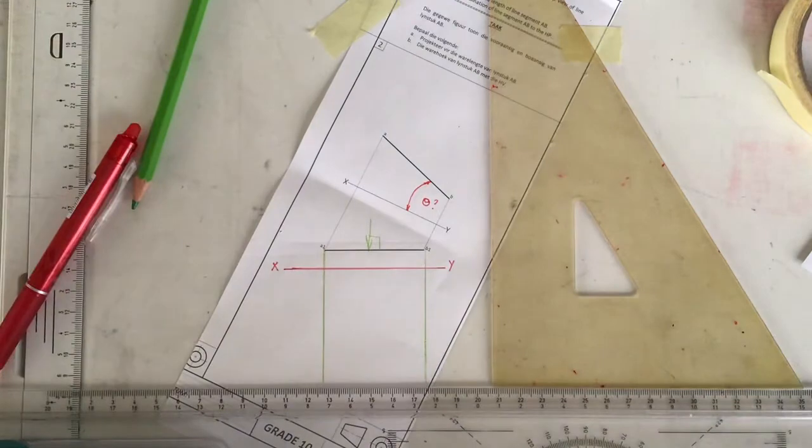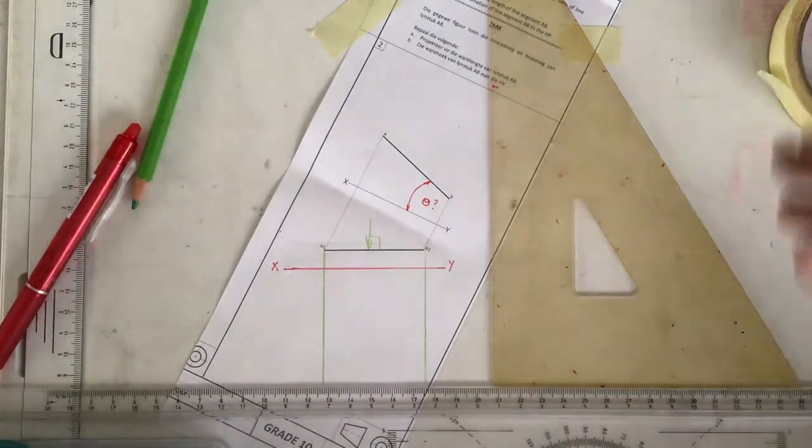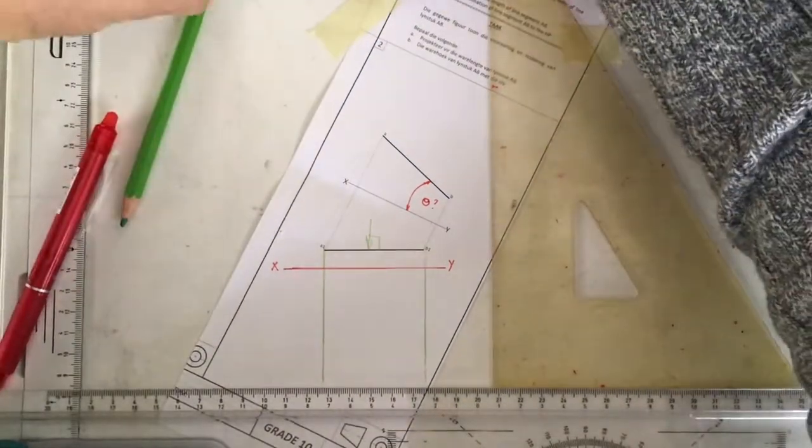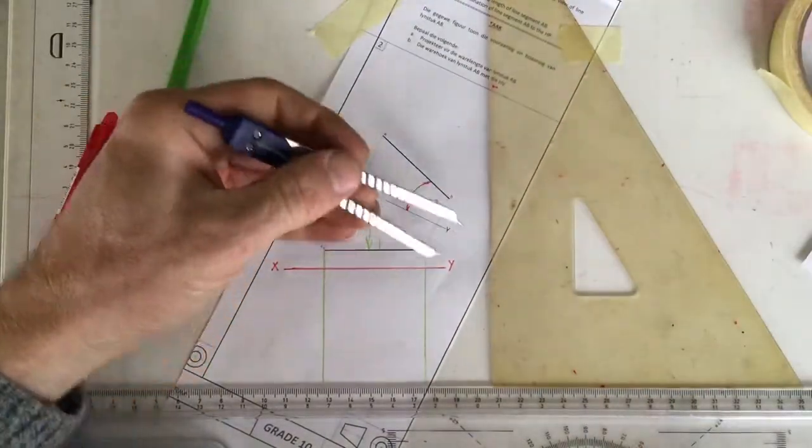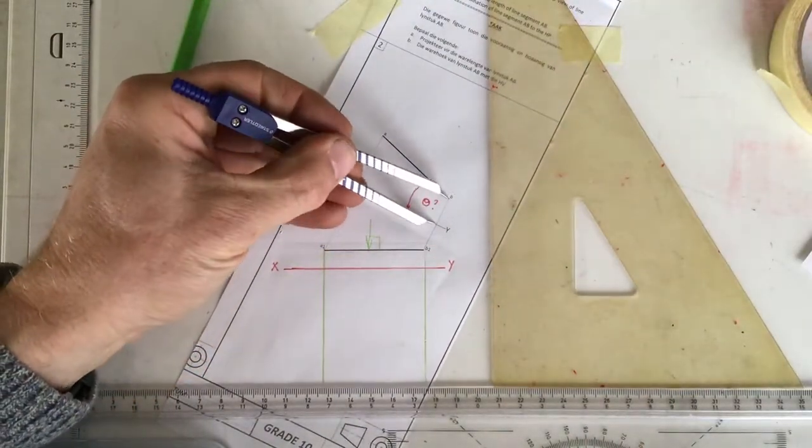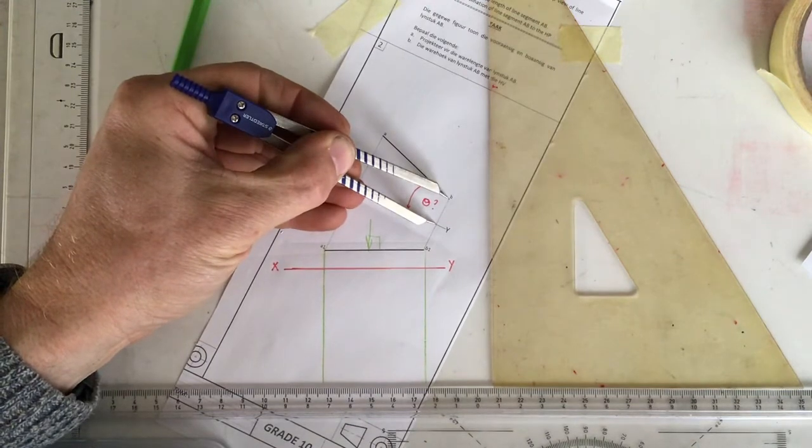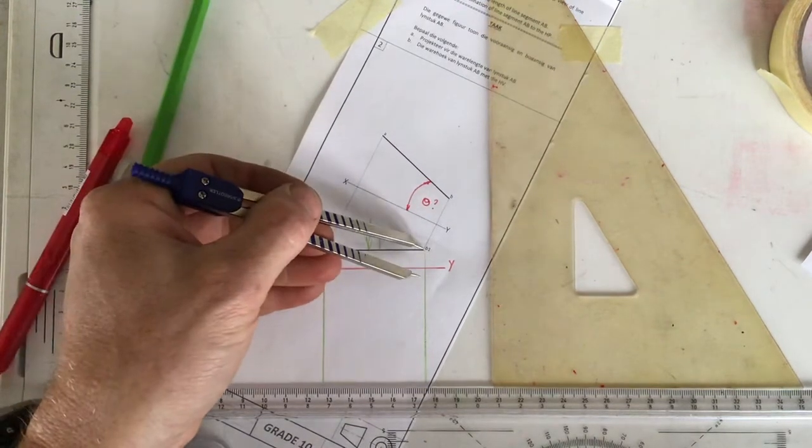Where am I going to get the information in order to draw the true length? Well, I'm going to use this view over here. I'm going to take that distance from the XY axis to B. I find B2 over there.